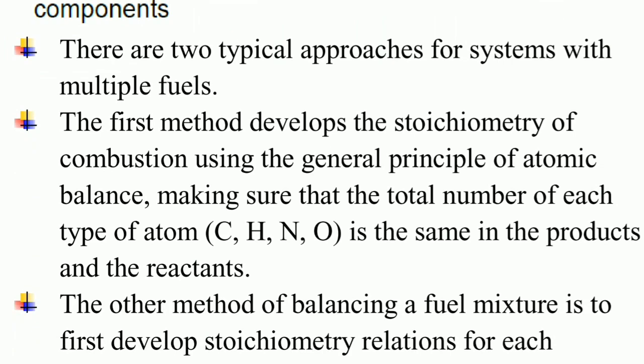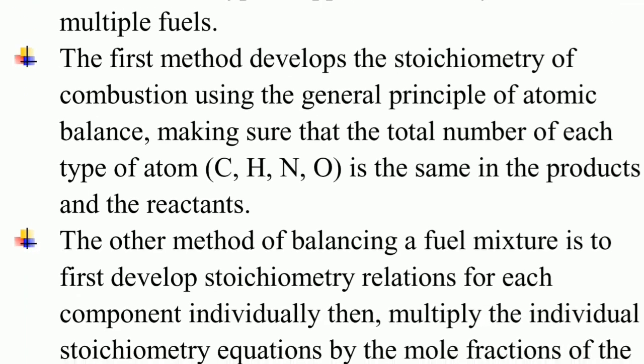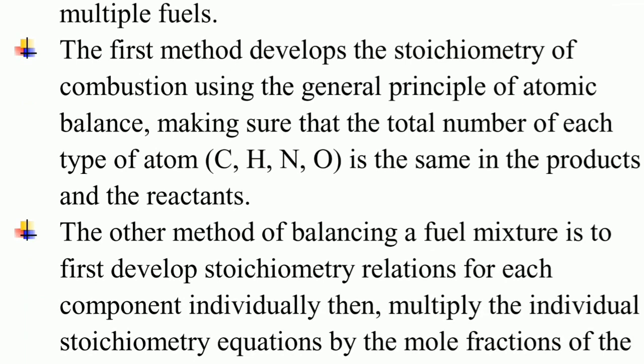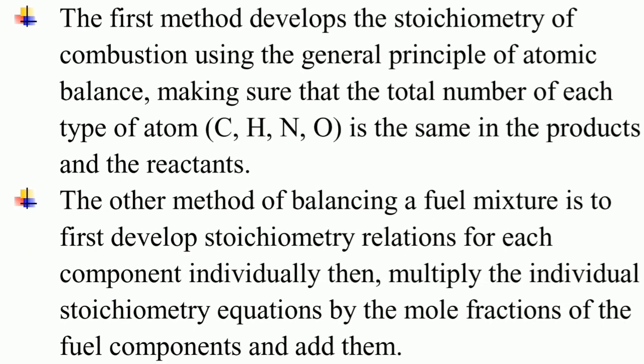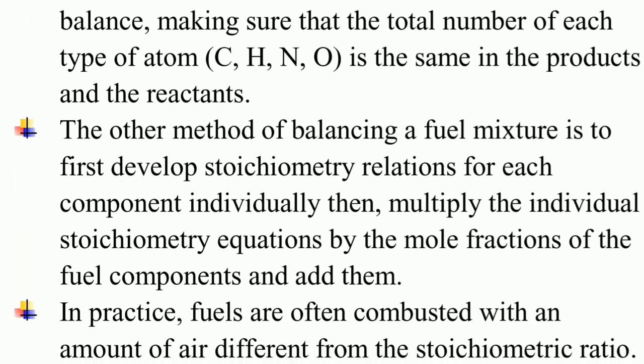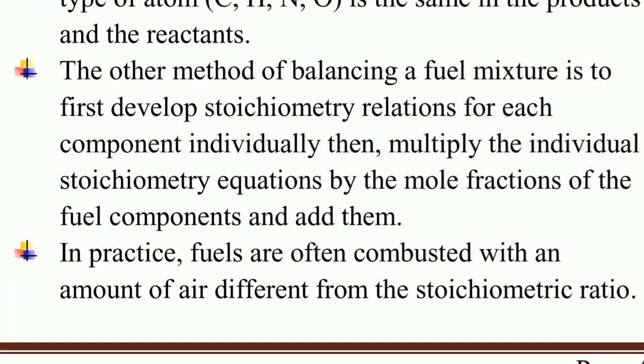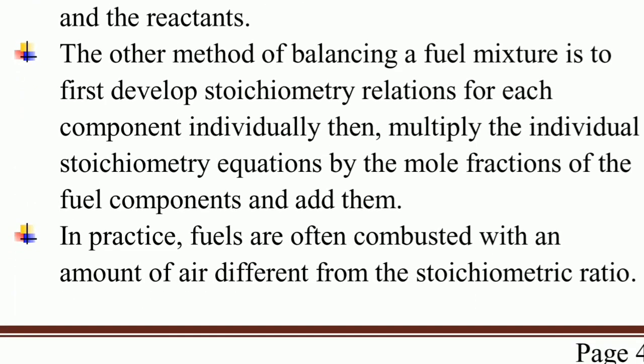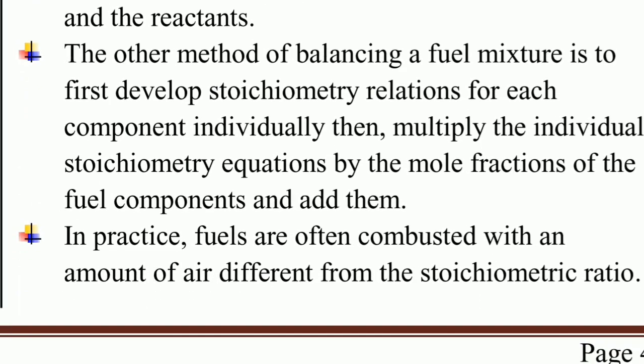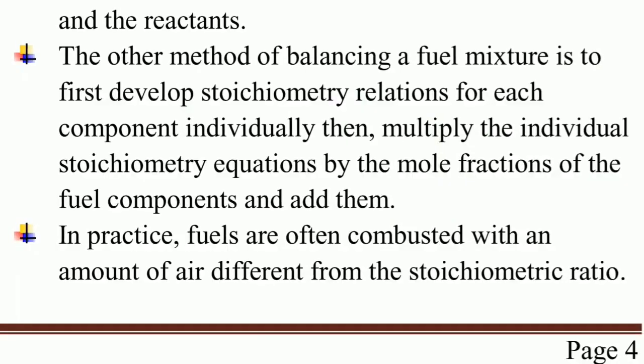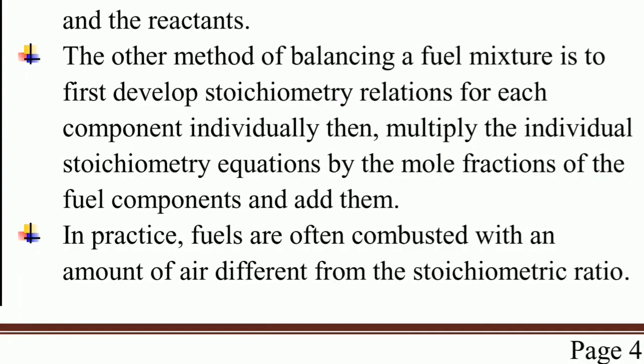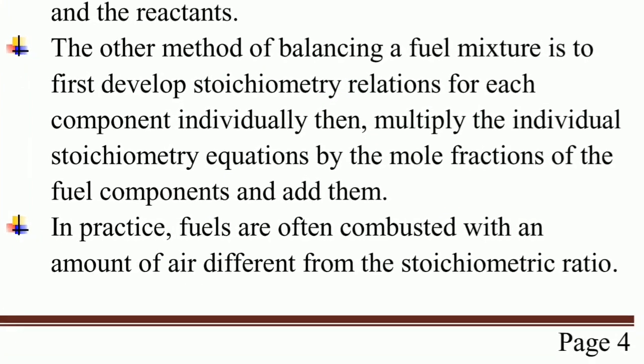Making sure that the total number of each type of atom—like carbon, hydrogen, nitrogen, oxygen—is the same in the products and the reactants. The other method of balancing a fuel mixture is to first develop stoichiometry relations for each component individually, then multiply the individual stoichiometry equations by the mole fractions of the fuel components and add them.